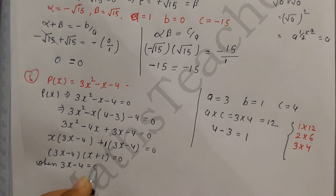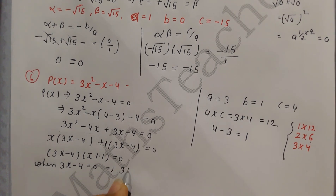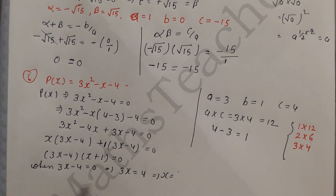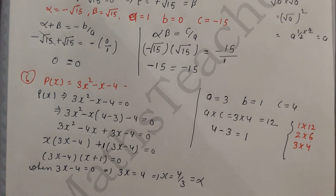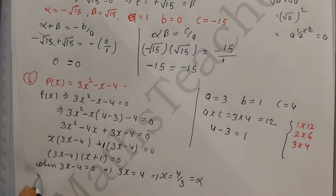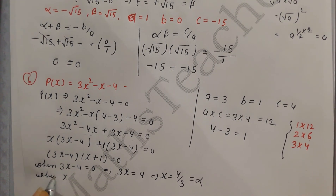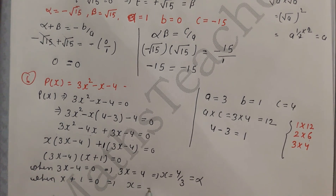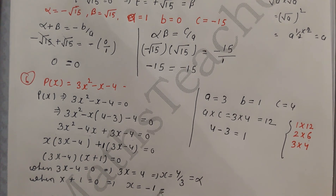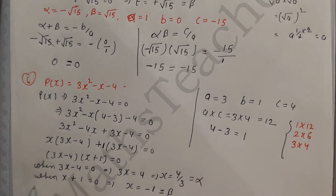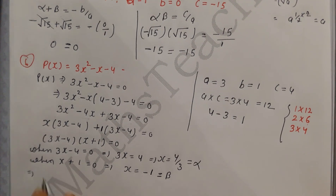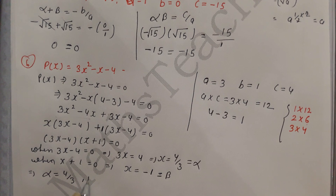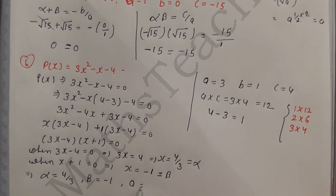Taking common factors from each group: x(3x minus 4) plus 1(3x minus 4) equals 0, giving (3x minus 4)(x plus 1) equals 0. From 3x minus 4 equals 0, we get x equals 4 by 3, which is alpha. From x plus 1 equals 0, we get x equals minus 1, which is beta.